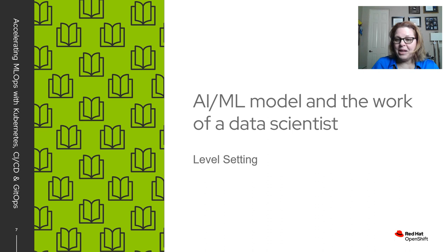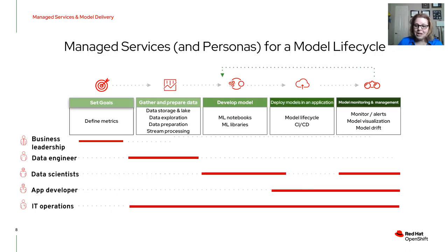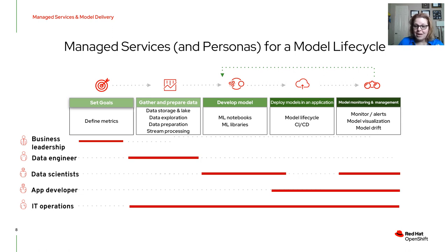Let's talk about an AI/ML model and the work of a data scientist. Now that we know the personas, let's see how they interact within the steps of the model life cycle — setting goals, gathering and preparing data, developing a model, deploying the model in an application, and model monitoring and management. Business leadership sets the goals and defines the metrics. The data engineer then gathers and prepares the data, whether from a data storage lake, doing data exploration and preparation, possibly using Apache Kafka for stream processing. Once they have a ready dataset, they hand it off to the data scientists.